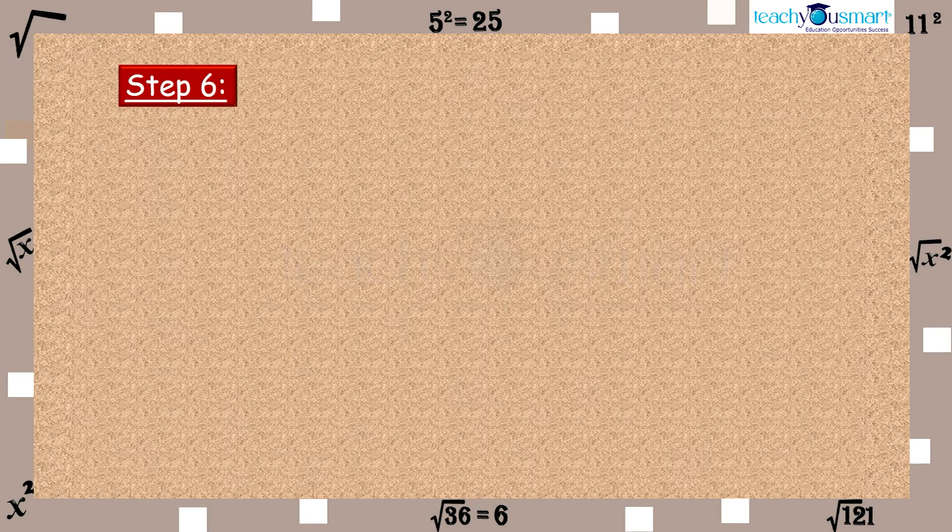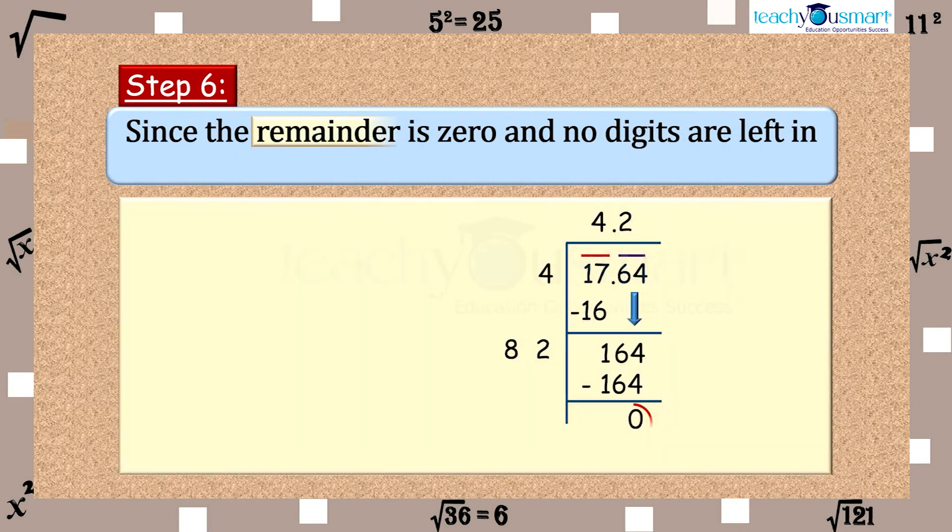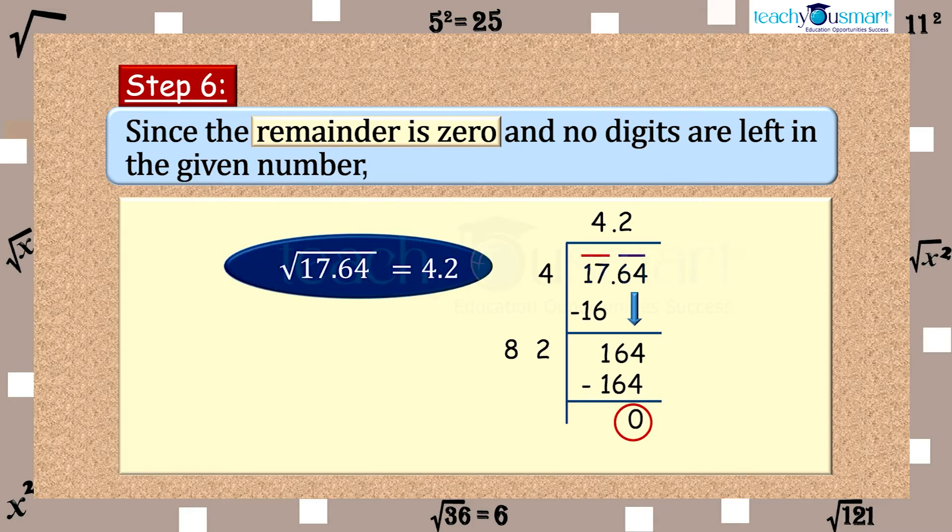Step 6. Since the remainder is 0 and no bar left, the square root of 17.64 equals 4.2.